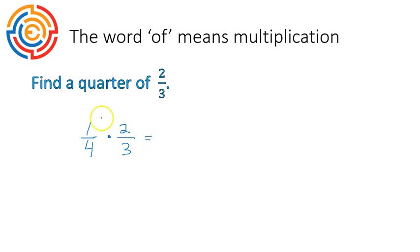We'll multiply. One times two gives us two. Four times three gives us twelve. And then we simplify by dividing both the top and bottom by our greatest common factor, which in this case would be two. And that leaves us with one-sixth. So a quarter of two-thirds is one-sixth. That would be our final answer.